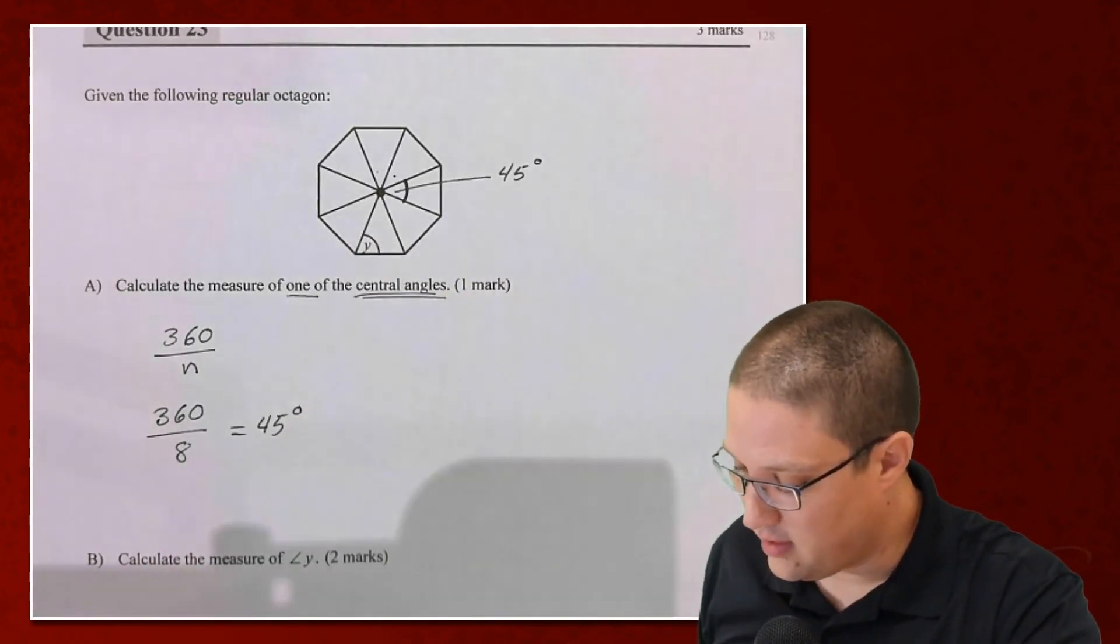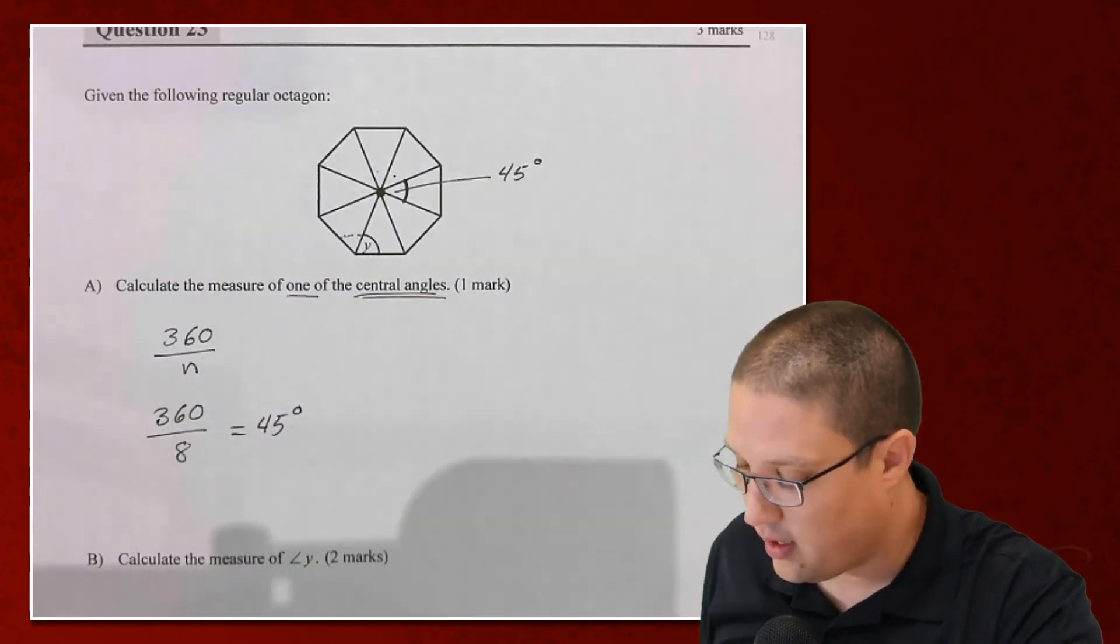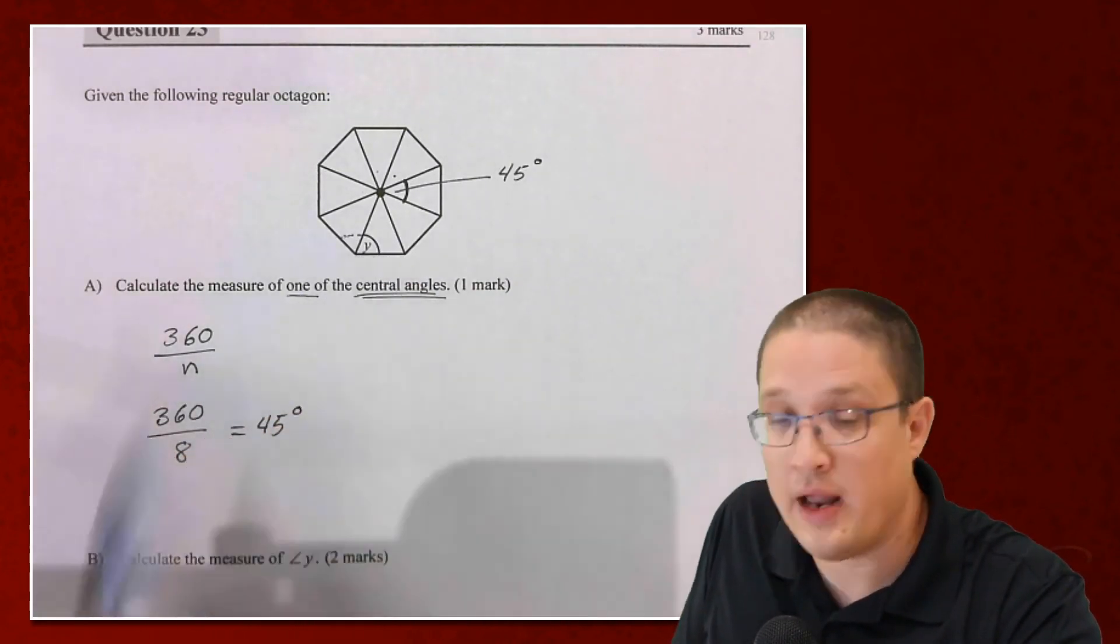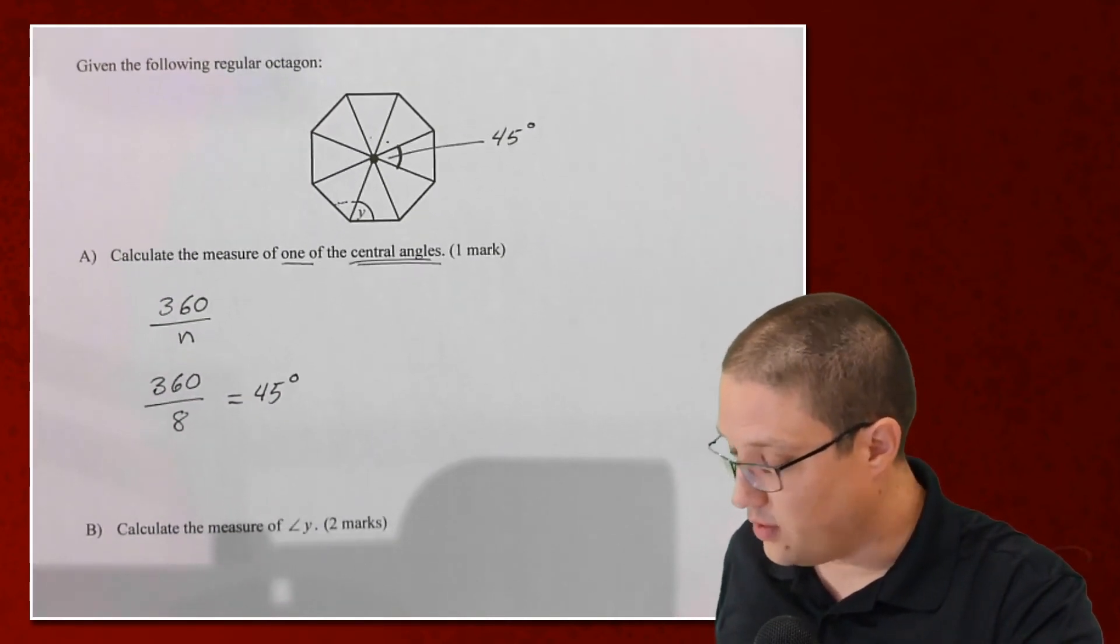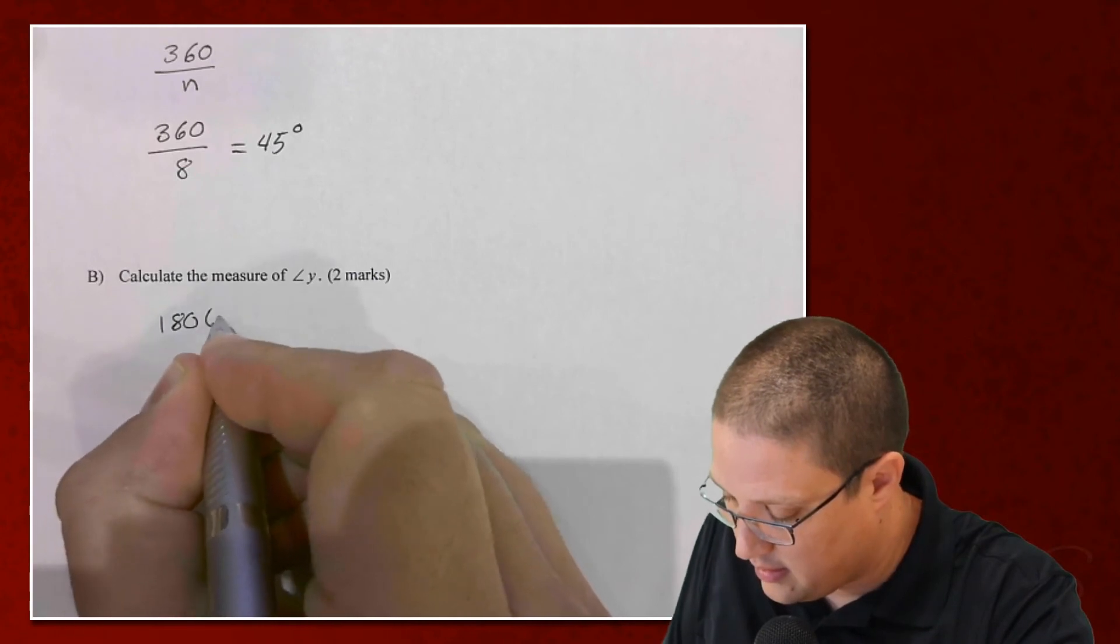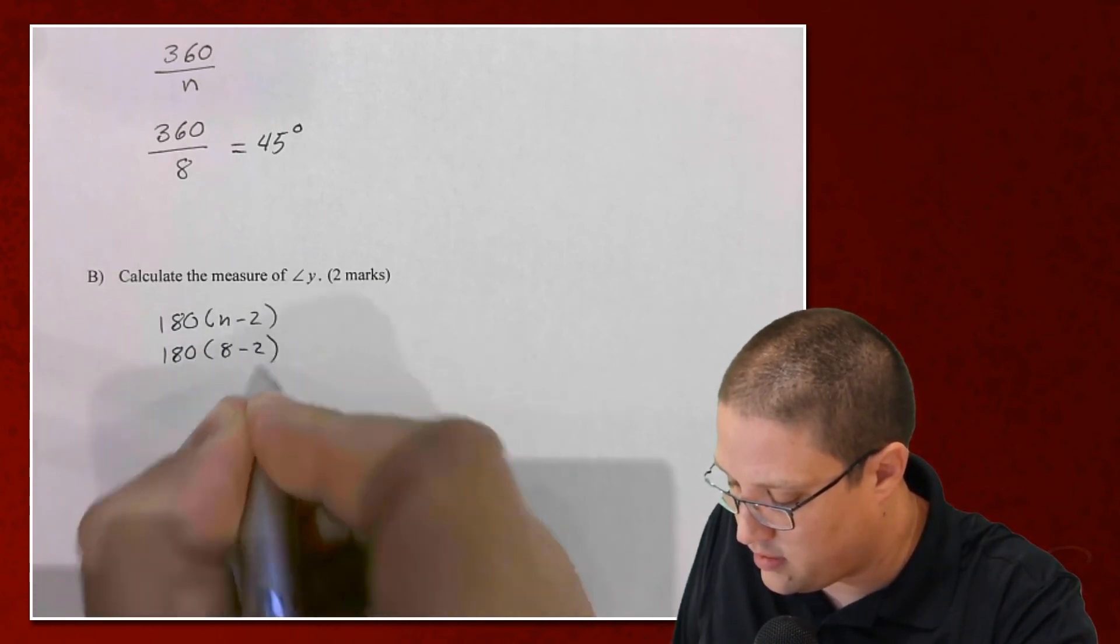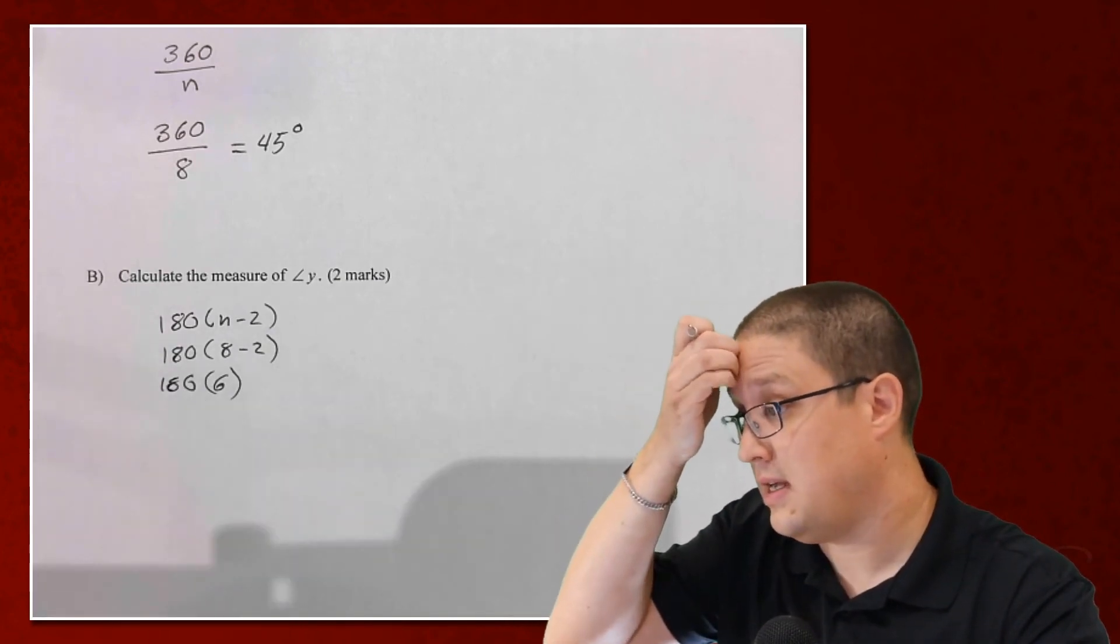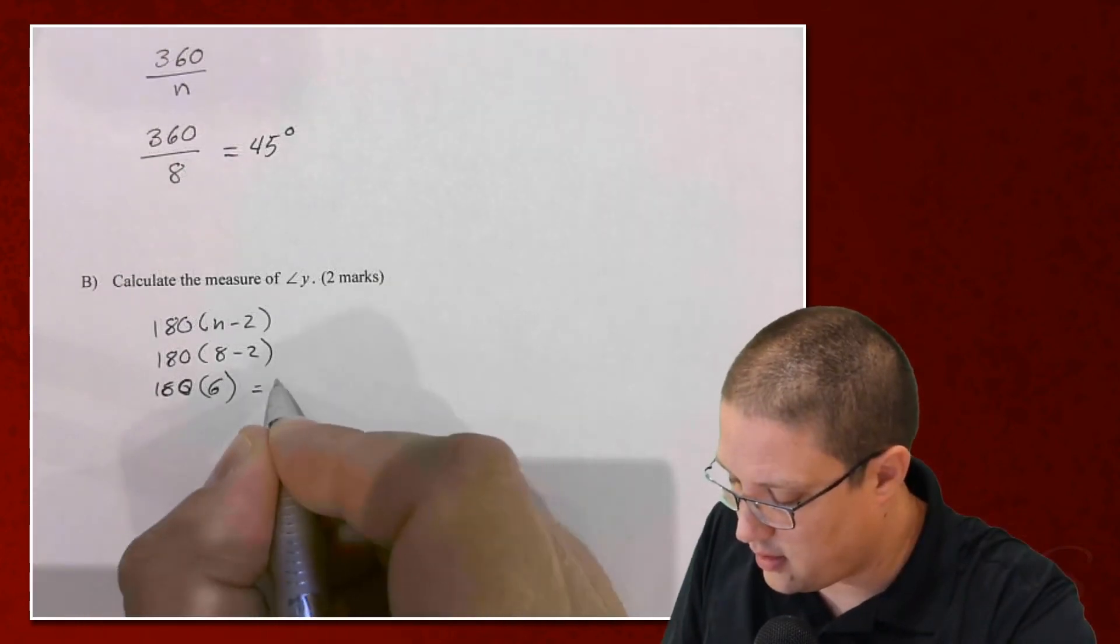The first way, I look at this and I go, well, angle Y here is half of my interior angle. So this here is the whole interior angle. So if I find that, I can cut it in half. All right. So to find my interior angle, I'm going to use the 180 times n minus 2. That's my formula. I'm going to do 180 times 8 minus 2. 8 minus 2 is 6. 180 times 6 is 1080.